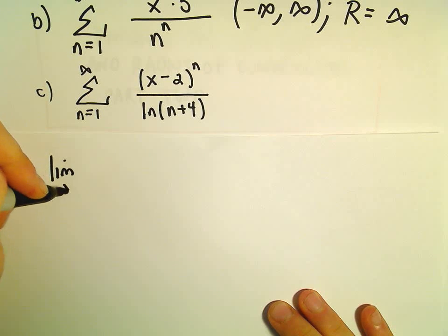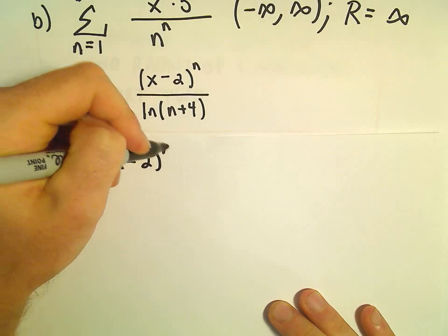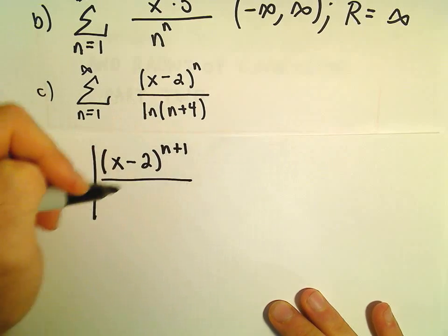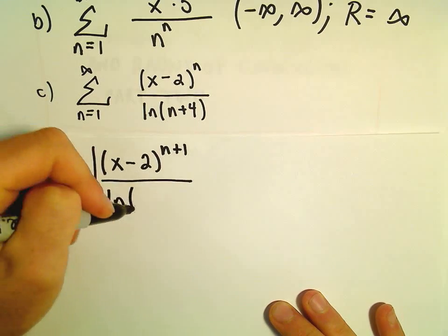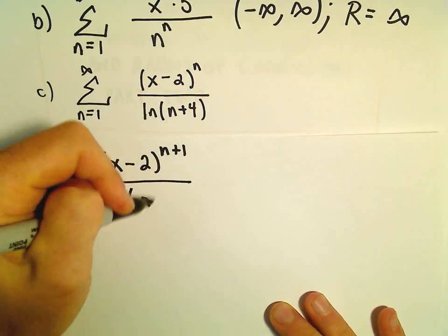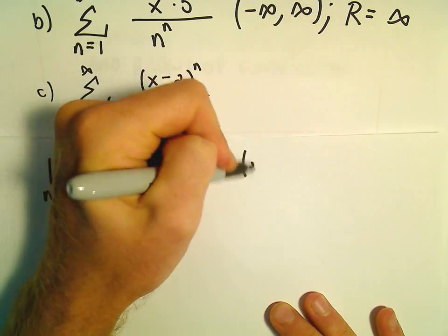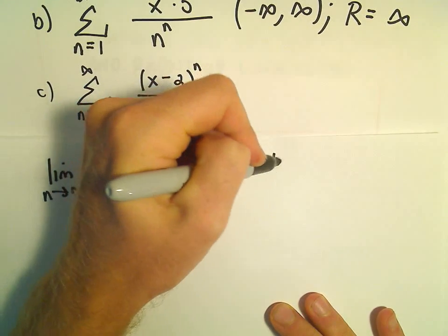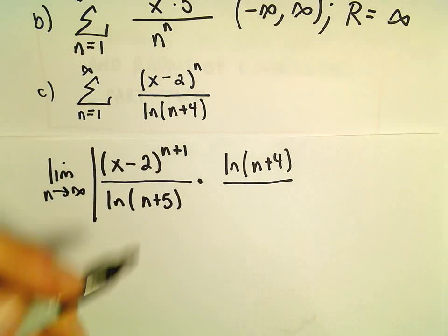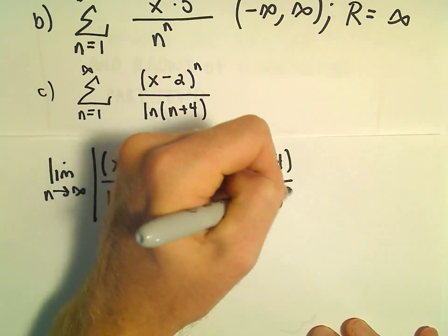So we'll do the limit as n goes to infinity of x minus 2 raised to the n plus 1, and then we'll have the natural logarithm of n plus 1 plus 4, which will be n plus 5. Multiply by the reciprocal, so the natural logarithm of n plus 4, and then x minus 2 raised to the n.